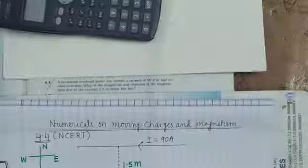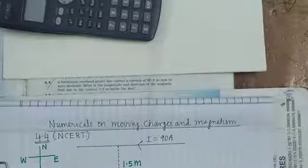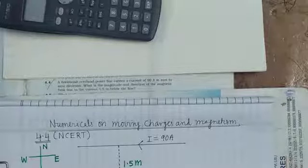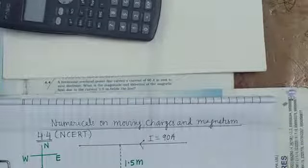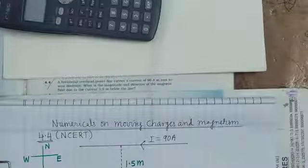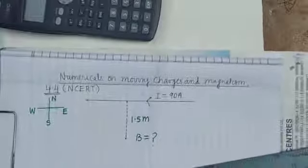Question 4.4: A horizontal overhead power line carries a current of 90 amperes in the east-to-west direction. What is the magnitude and direction of the magnetic field due to the current, 1.5 meters below the line?